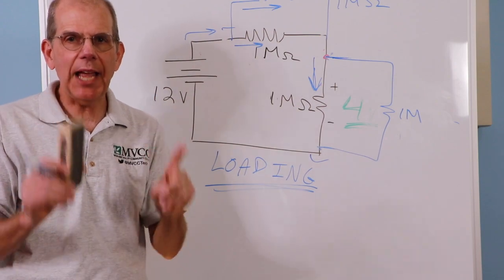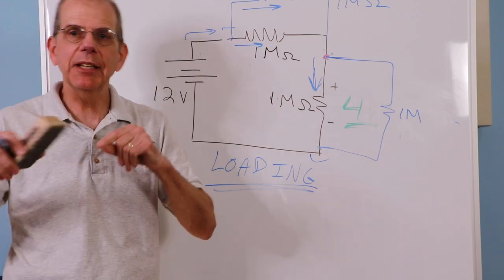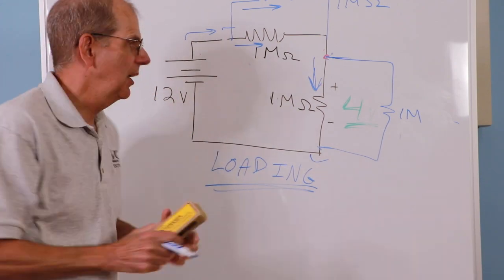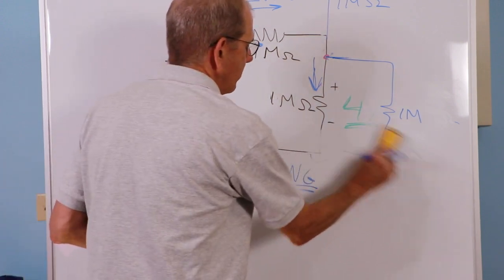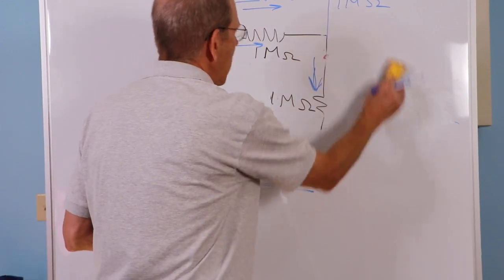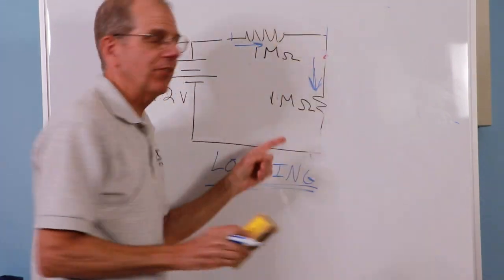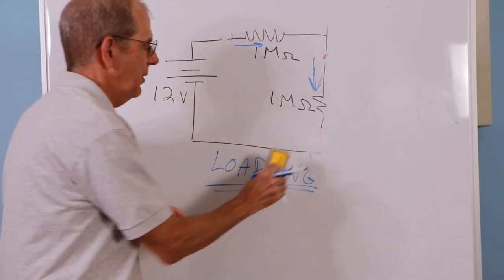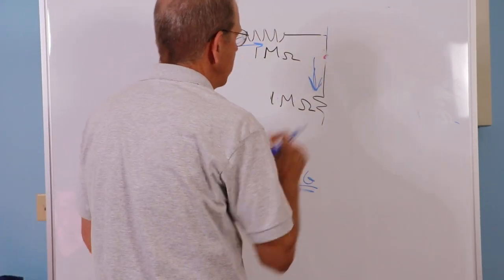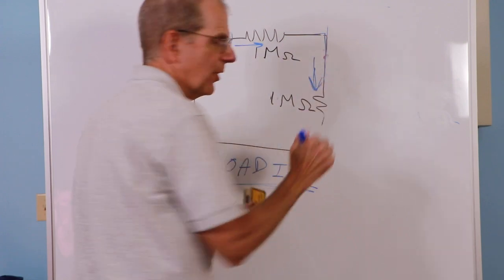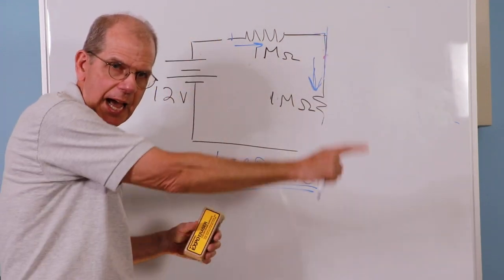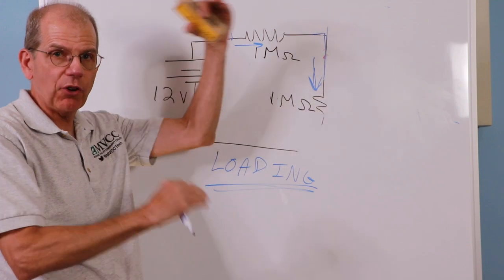Now, the same thing will happen on current, but it's sort of a mirror image. When we measure current, the problem is not with really big resistances. It's with really small resistances.